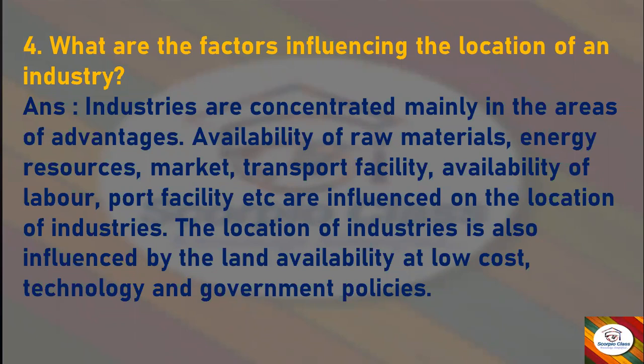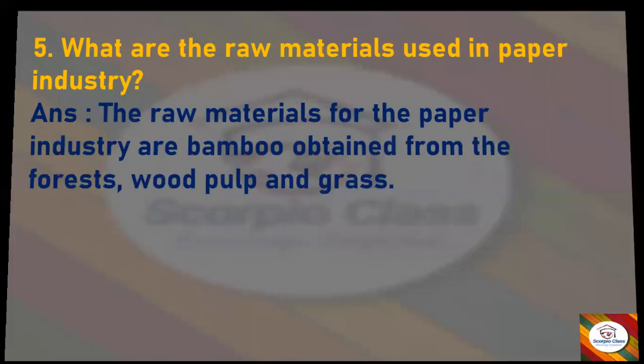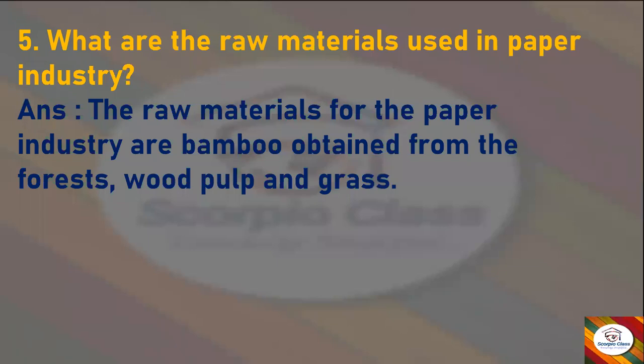Next question: What are the factors influencing the location of an industry? Answer: Industries are concentrated mainly in areas with advantages such as availability of raw materials, energy resources, market, transport facility, availability of labor, and port facility. The location of industries is also influenced by land availability at low cost, technology, and government policies. These are the factors that influence the location of an industry.